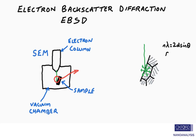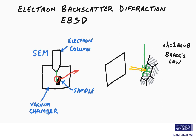Where those scattered electrons satisfy the conditions for Bragg diffraction, or n lambda equals 2d sin theta, we get diffracted electrons in the form of a pair of open cones for each lattice plane.